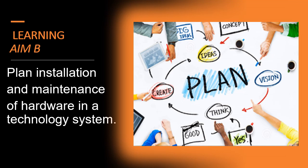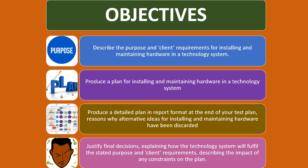We'll be working on learning A and B, and for learning A and B we will be planning the installation and maintenance of hardware in a technology system. The objectives we'll be covering today include describing the purpose and client requirements for installing and maintaining hardware, and producing a plan for installing and maintaining hardware. We'll also be producing a detailed plan in report format at the end of your test plan, along with reasons why alternative ideas for installing and maintaining hardware have been discarded. That's for your M's.